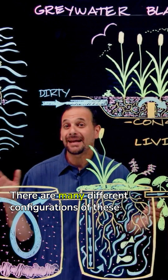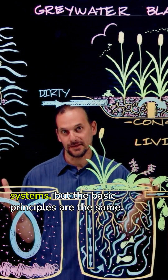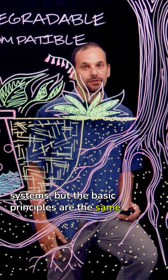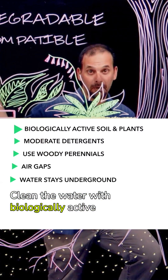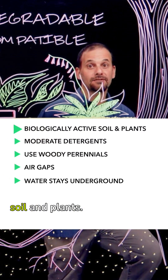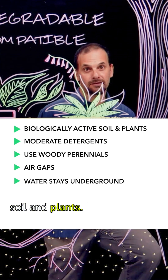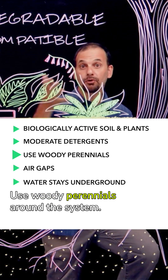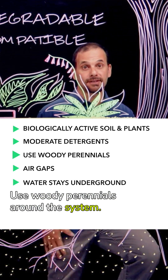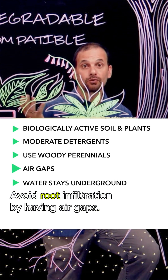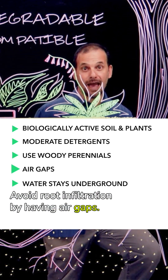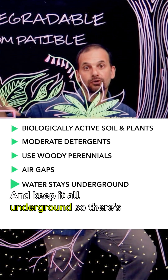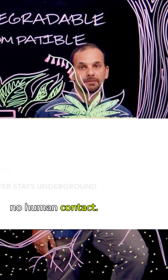There are many different configurations of these systems but the basic principles are the same: clean the water with biologically active soil and plants, moderate what you put down the drain, use woody perennials around the system, avoid root infiltration by having air gaps, and keep it all underground so there's no human contact.